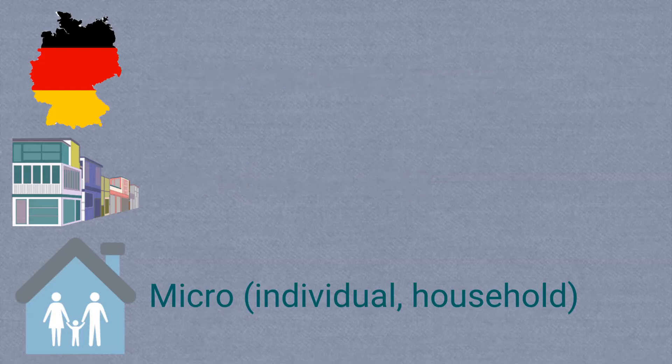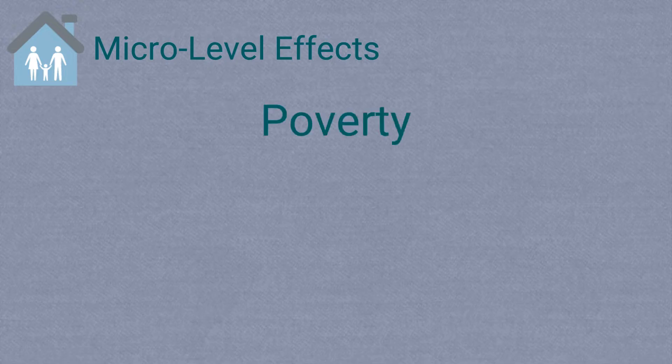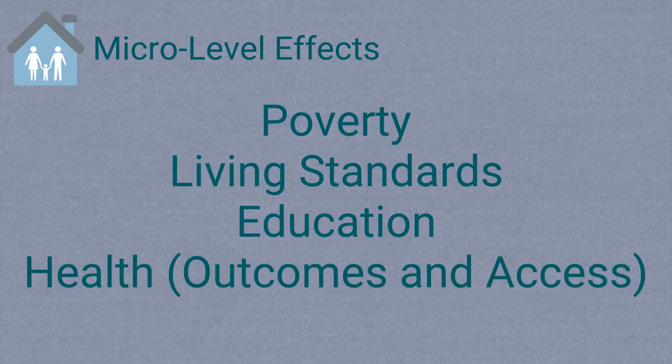Let's start by looking at some individual or household level effects and work our way up to the country or macro effects. At the individual or household level, some of the most common effects of migration are on poverty, living standards, education of children, and health outcomes and access to health care of household members who stay behind.